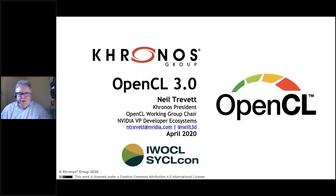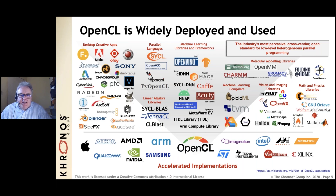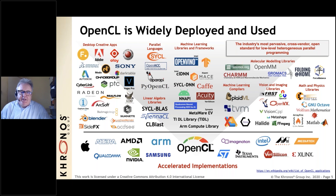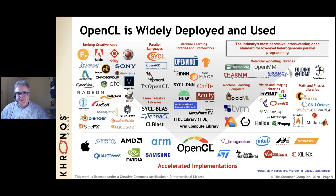Neil will briefly update the audience on the OpenCL 3.0 launch — a lightning tour, with more details available on the Khronos website. OpenCL is the most widely used open standard for low-level parallel programming, at a time when Moore's Law is slowing and parallel programming with acceleration offload to heterogeneous processors is becoming essential across markets from high-performance computing to embedded and mobile platforms.